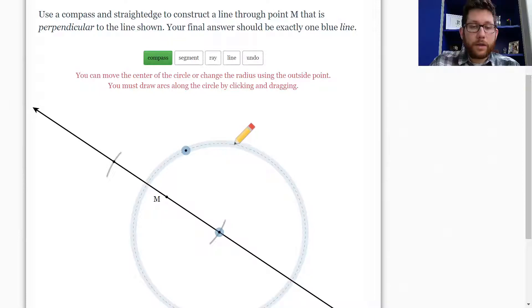I'm going to do one point here and make my arc something like this. Then I'll pick it up, drag it over here, and make a second arc something like that. I should get my two crossing marks.